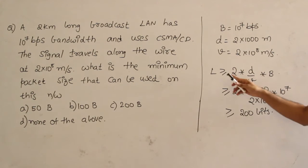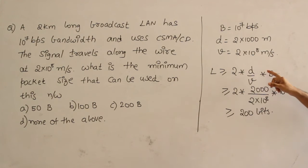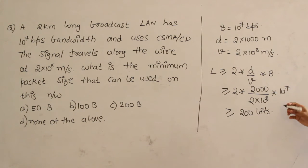Then I am just substituting it in the formula right away. So L is greater than or equal to 2×tp×bandwidth. What is tp? d by v. Distance is this much, velocity is this much, bandwidth is this. So I have got that minimum length of the packet is 200 bits.